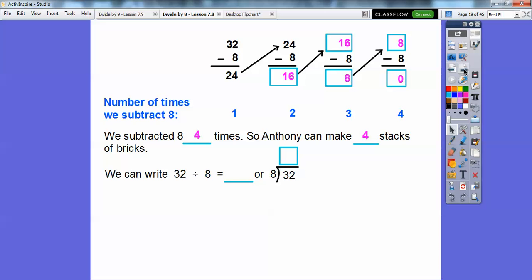So we can write 32 divided by 8 this way and it's going to equal 4. Or we can write 32 divided by 8 equals this way. And don't forget the 4 goes right above the 2 right there. So we can write it that way.